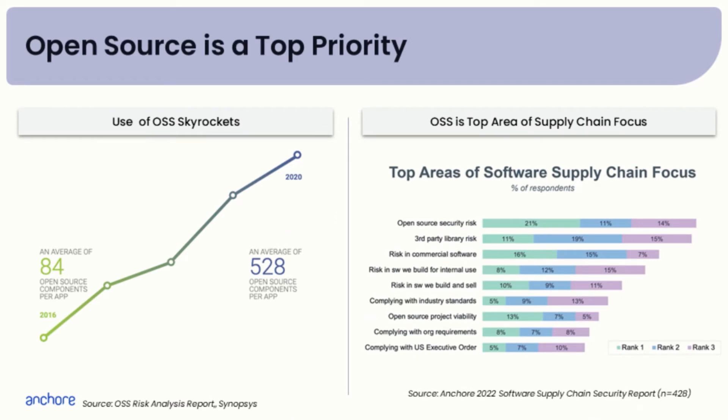With the use of open source skyrocketing, we now have an average of 528 open source components per application. So while you may think that you're not impacted because you use commercial products, you must realize that a big chunk of the code of that commercial application is made of open source projects. So whether or not you like it, you have a lot of open source inside of your systems.